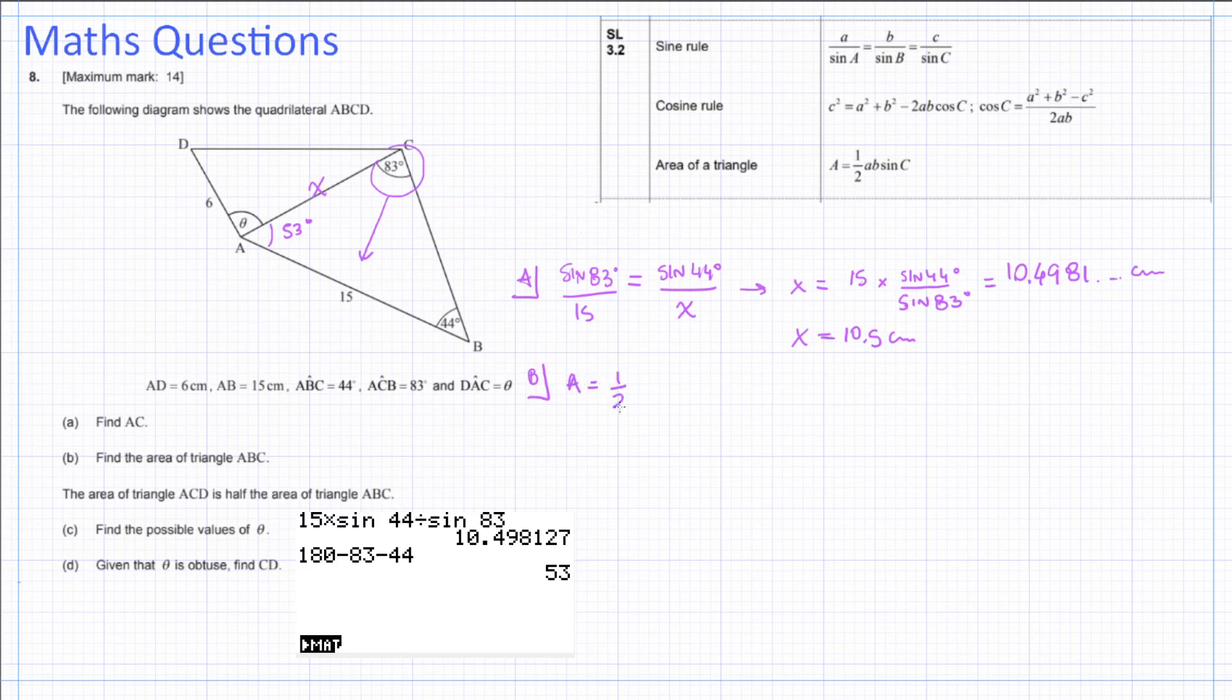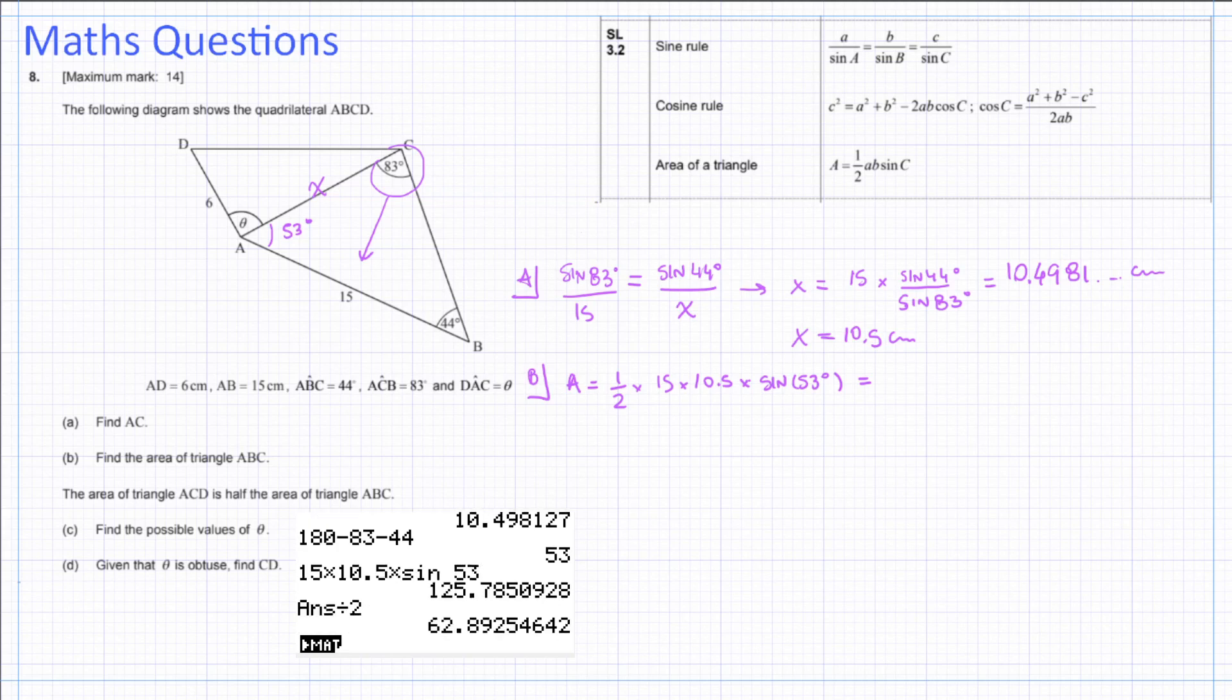If you want to calculate the area, you will basically do half times—we're going to use those two sides. 15 in centimeters, multiplied by 10.5 also in centimeters, multiplied by the sin of our angle, which is 53 degrees. Since those two measurements are in centimeters, our final area will be in centimeters squared. Let's put those values in our calculator. 15 multiplied by 10.5, multiplied by sin of 53, and we still have to divide this by 2. Again, up to three significant figures, our value will be 62.9 squared centimeters.